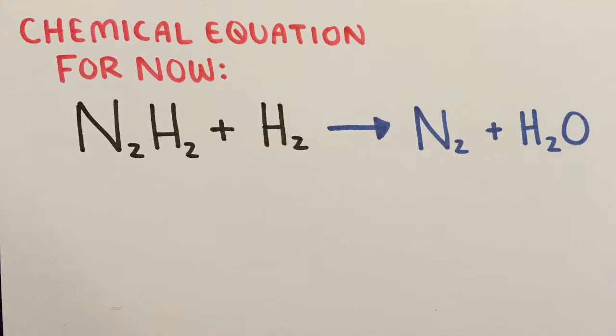So our chemical equation for now is N2H2 plus H2O2 yields to produce N2 plus H2O. Note I said for now because it might be changed later.